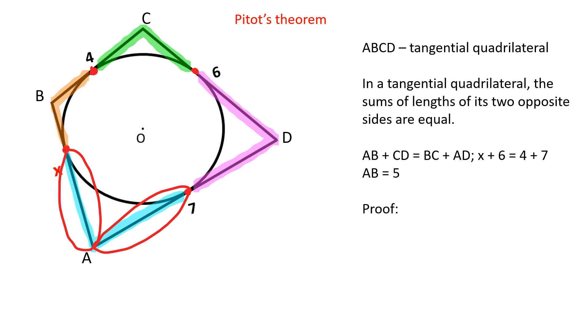For example, the blue segments are equal to each other, and so on. The sum of AB and CD is equal to the sum of an orange segment, a blue segment, a green segment, and a pink segment.